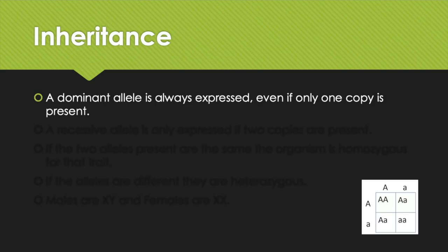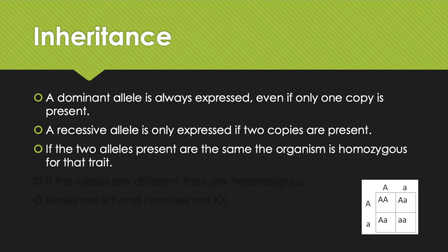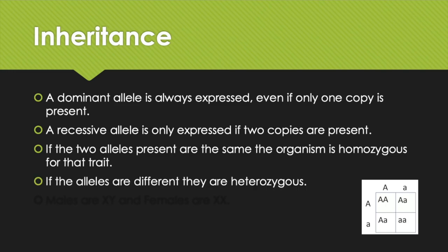In inheritance, you need to know some important words. The dominant allele is the one that's always expressed, even if there's only one copy present. The recessive allele is only expressed if you have two copies present. If the two alleles are the same, the organism is homozygous for that trait; if the alleles are different, they're heterozygous. These definitions are taken from the specification — just reproduce them verbatim in the exam.